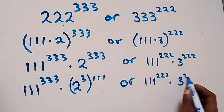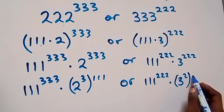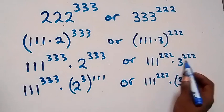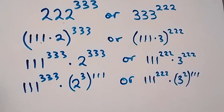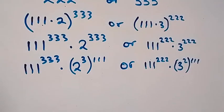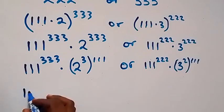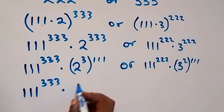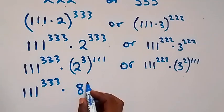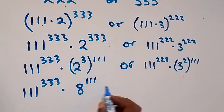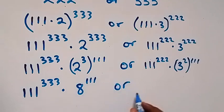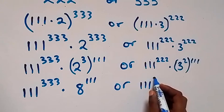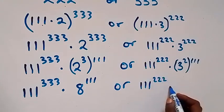...we can write this as 3 squared, then raised to power 111. When this multiplies we still have 222. Then from here we can write this as 111 raised to power 111, times 111 raised to power 111, raised to power 112.